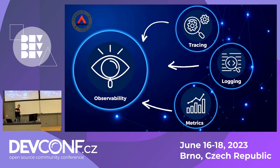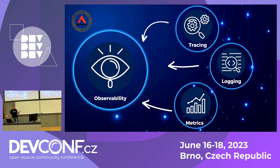Now that we understand API gateway, observability, and APISIX, let's talk about the observability pillars. There are three key areas: metrics, logs, and traces.